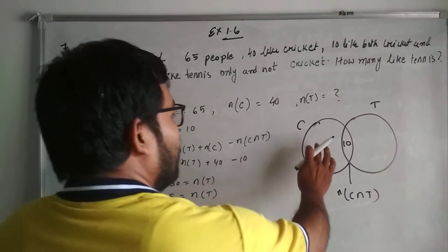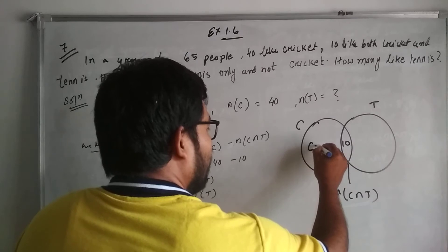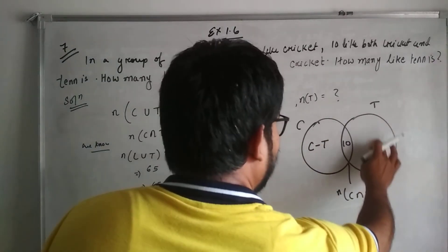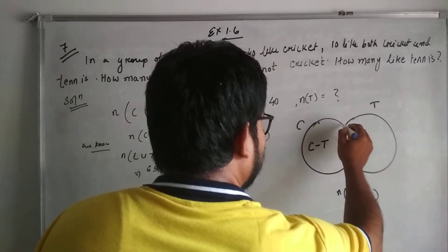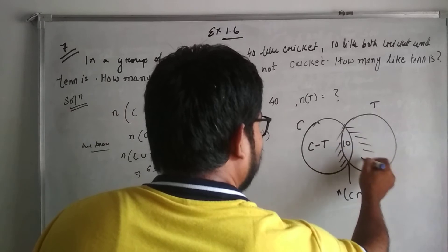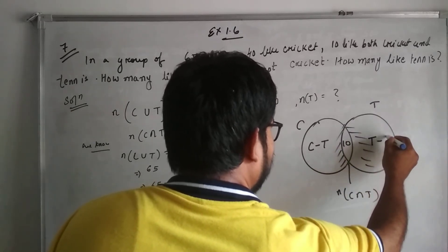What is the remaining part here? Here is only cricket, not tennis - that's C minus T. This particular part, I'm talking about only this part, not the intersection. And this particular part is T minus C.